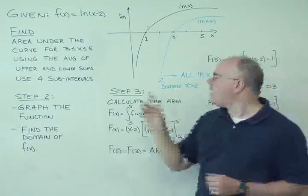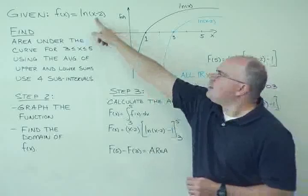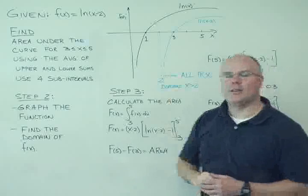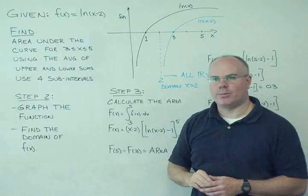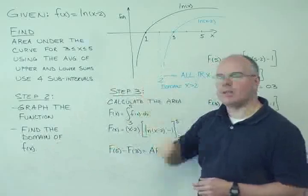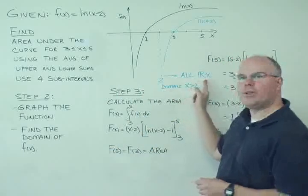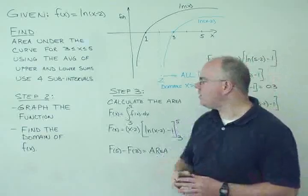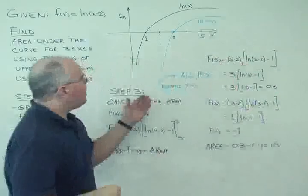Because if I have a number less than 2, let's say 1, 1 minus 2 is minus 1, and I can't take the log of that negative number. So our domain, we've already found the domain just by graphing this function, and that is all real values for x greater than 2 are valid in this case. So let's go ahead and proceed here.